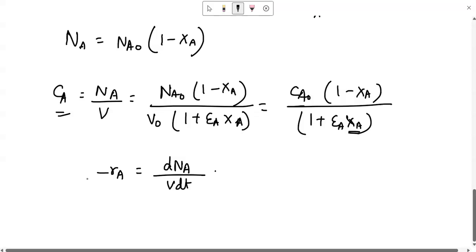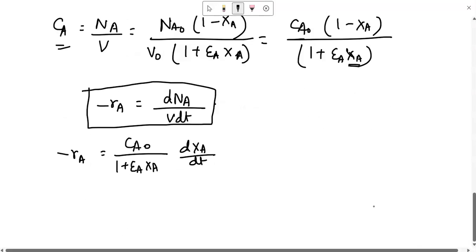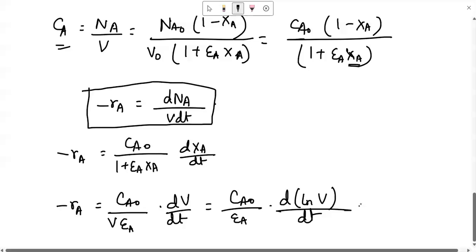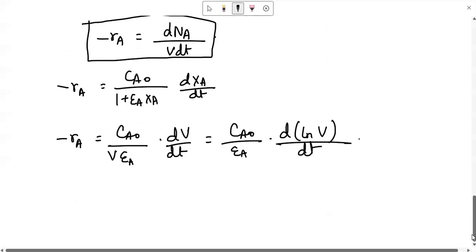Then you will get minus rA equals to CA0 by (1 + epsilon A XA) into dXA/dt. This is the expression that you will get. If you want to calculate this in terms of volume, then you can also write minus rA equals to CA0 by V into epsilon A multiplied by dV/dt.